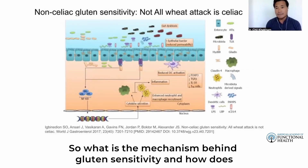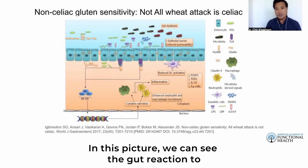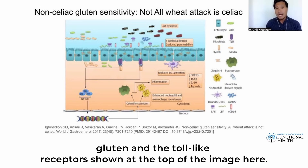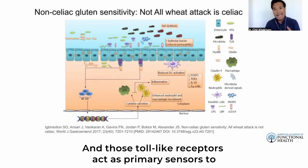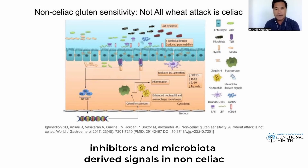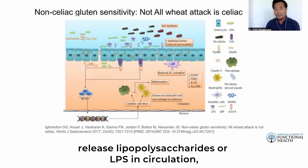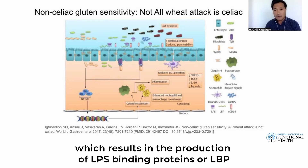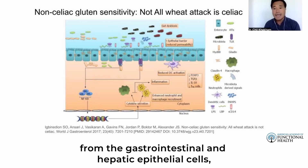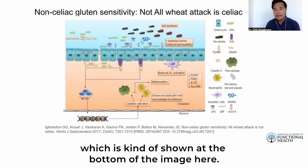What is the mechanism behind gluten sensitivity and how does it affect our body, particularly our microbiome? In this picture we can see the gut reaction to gluten and the toll-like receptors shown at the top of the image. Those toll-like receptors act as primary sensors to gliadin and non-gluten proteins like alpha-amylase, trypsin inhibitors, and microbiota-derived signals in non-celiac gluten sensitivity. Dysregulated microbiota also release lipopolysaccharides (LPS) in circulation, resulting in the production of LPS-binding proteins (LBP) from gastrointestinal and hepatic epithelial cells, along with soluble CD14 from monocytes and macrophages.